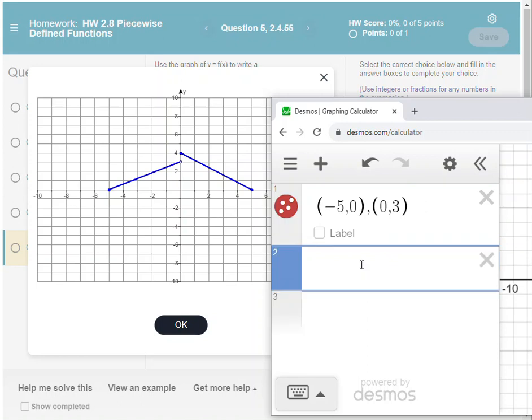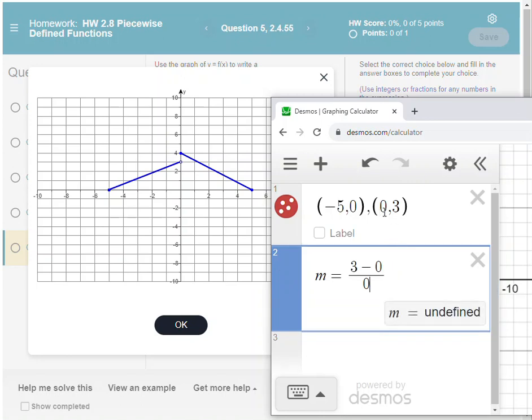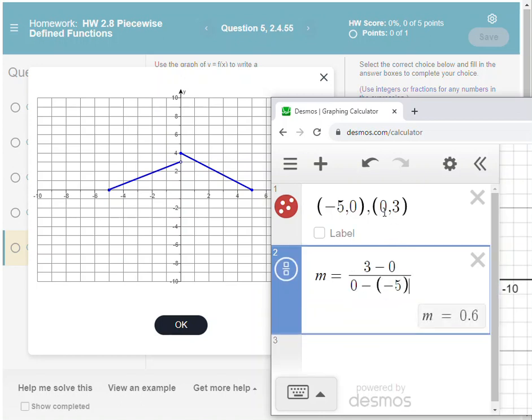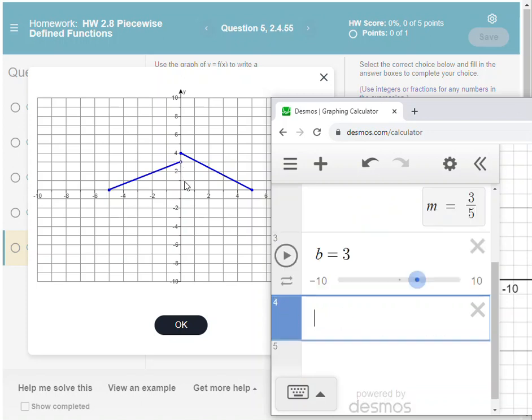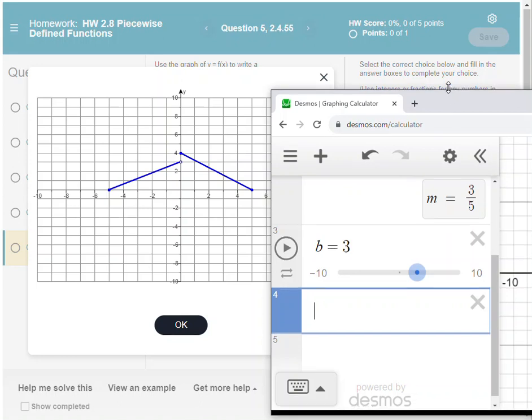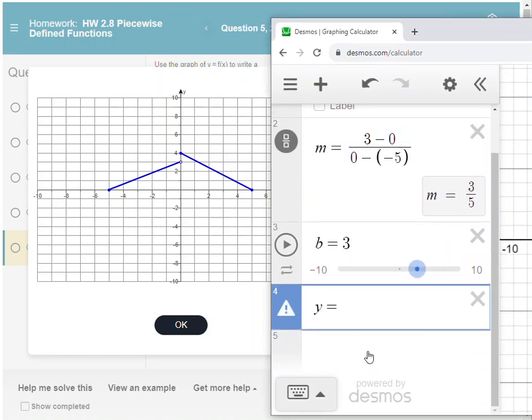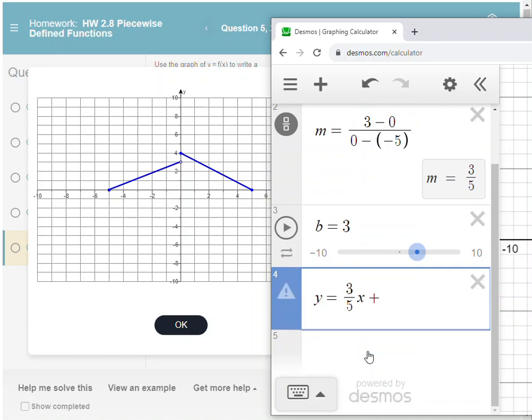Okay, so those are the two ordered pairs and I'm going to calculate the slope. The slope here is going to be, let's see, I'll start with 3 minus 0 over 0 minus negative 5, and if I keep that in fraction form, my slope is positive 3/5. Now I can already see the b value for this line because I can see the y-intercept right here is 3. So I can write the equation of the first line here as y = (3/5)x + 3.